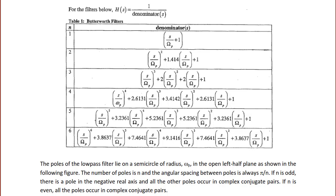Here are some examples of transfer functions for Butterworth filters of the form H(s) = 1/D(s). For n=1, the denominator is (s/ωp + 1). For n=2, it is (s/ωp)² + 1.414(s/ωp) + 1. For n=3, the denominator is (s/ωp)³ + 2(s/ωp)² + 2(s/ωp) + 1, and so on.